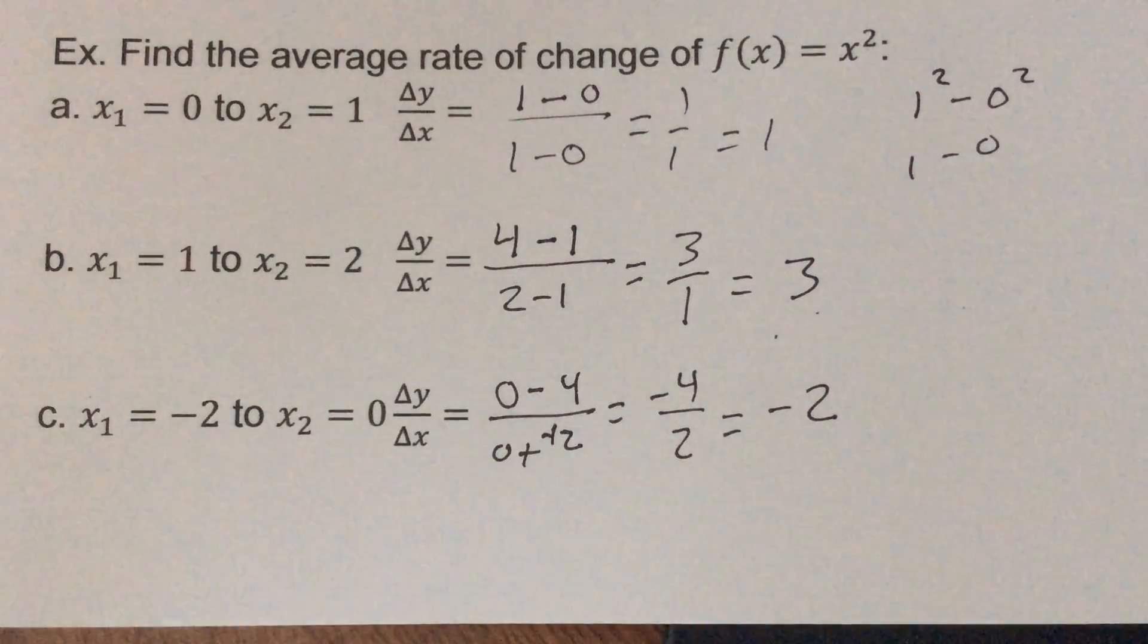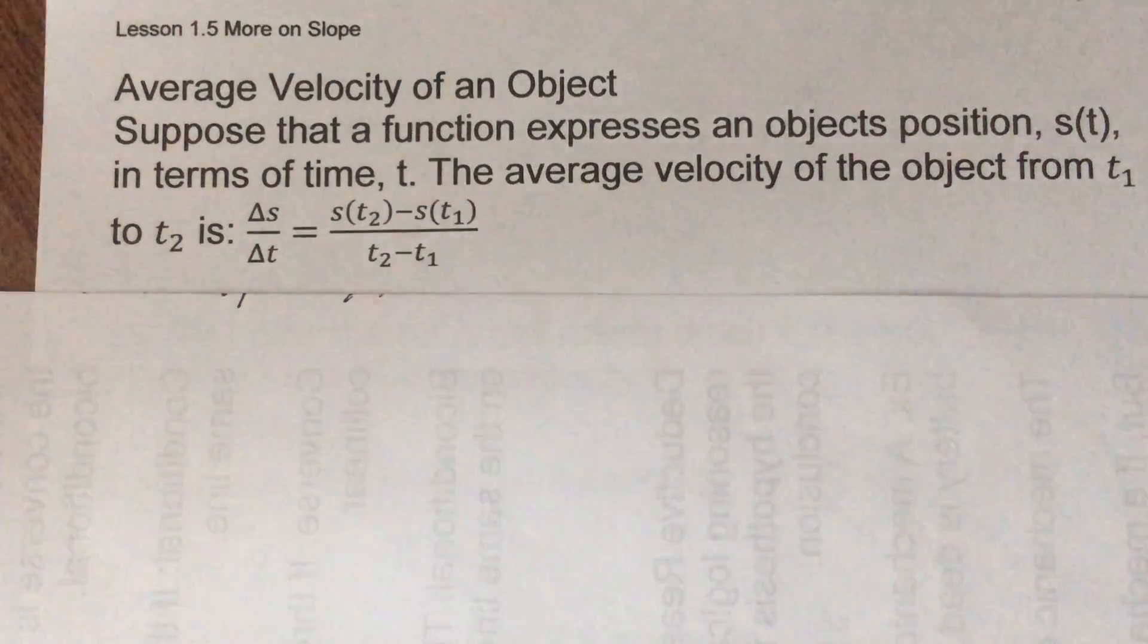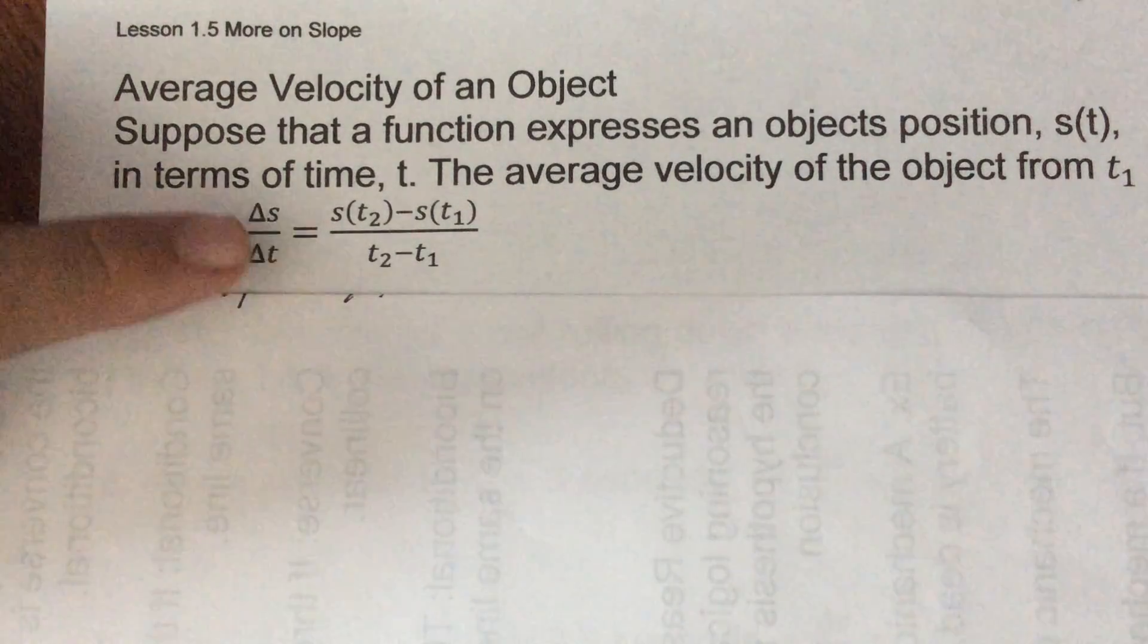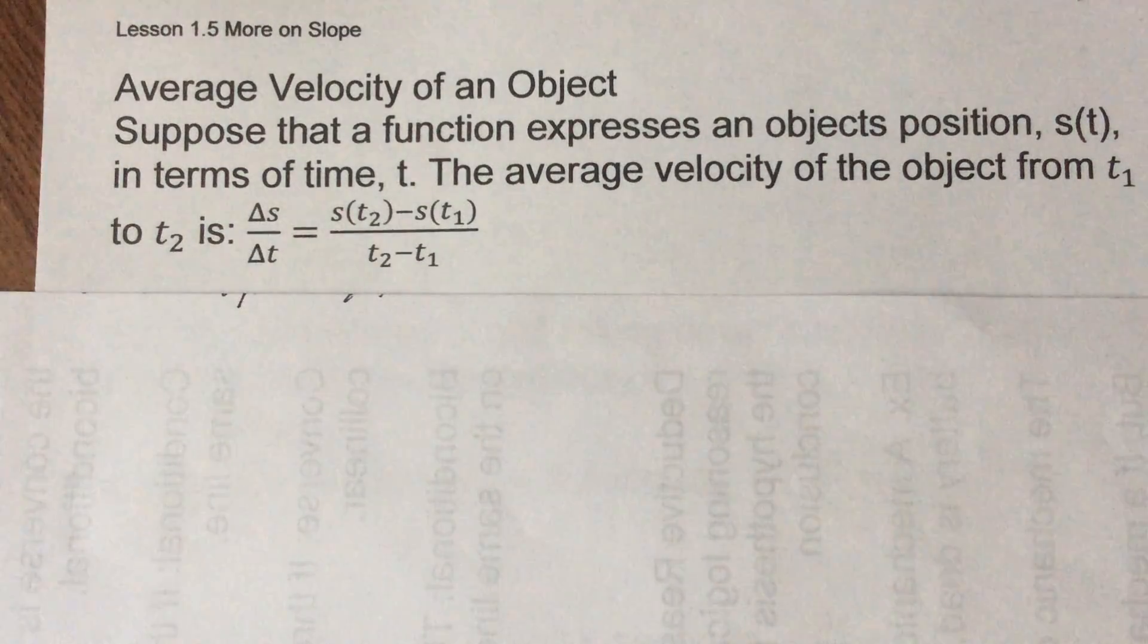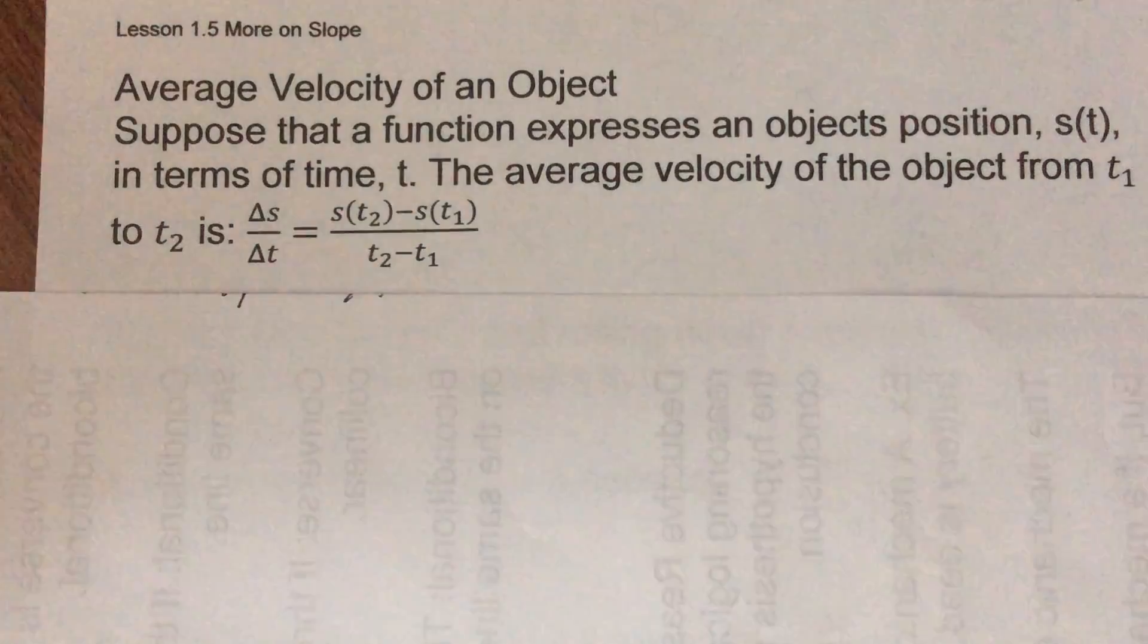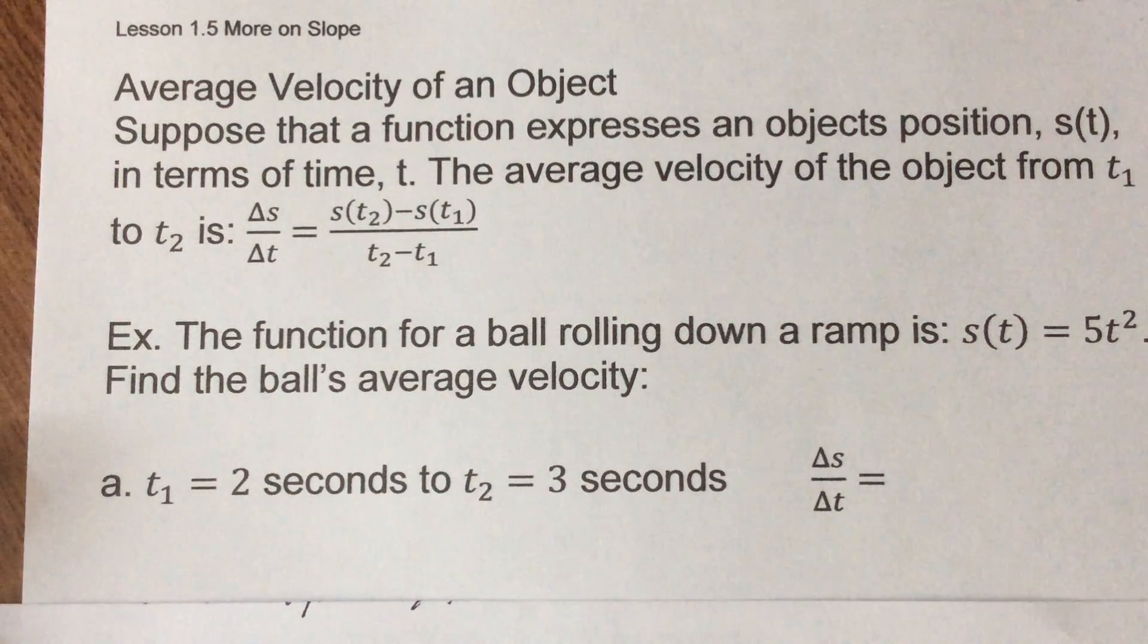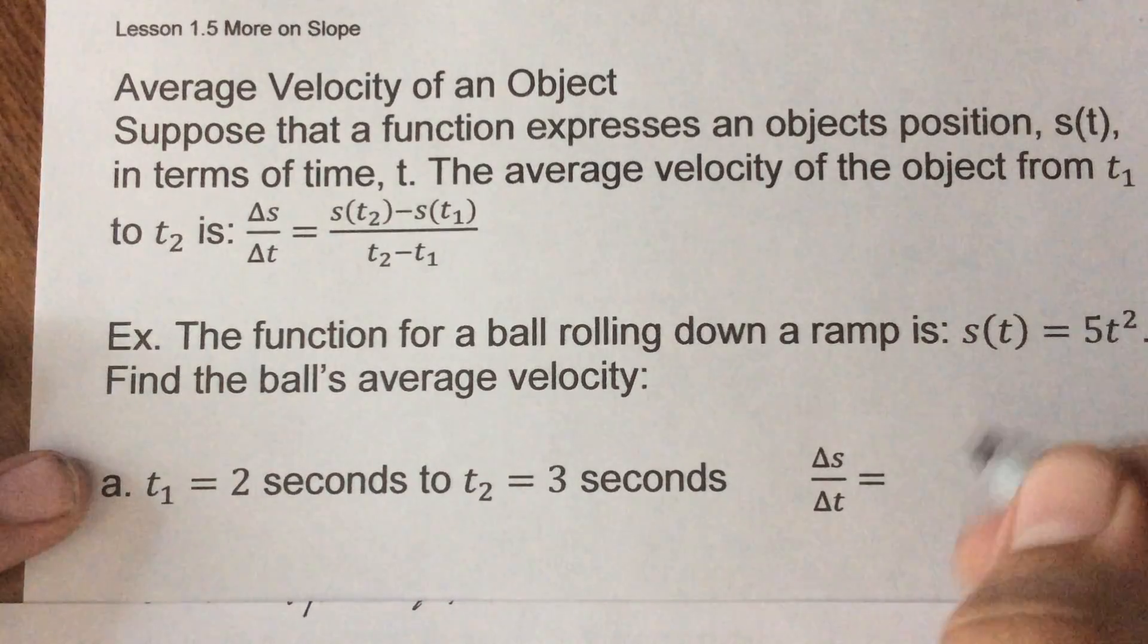So average velocity of an object is really the same thing, only we replaced y with an s and x with a t. So that s stands for position, t stands for time, so that it can fit a velocity equation. The function for a rolling ball down a ramp is 5t squared, so find the ball's average velocity.